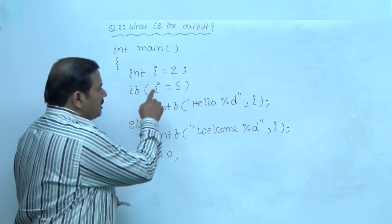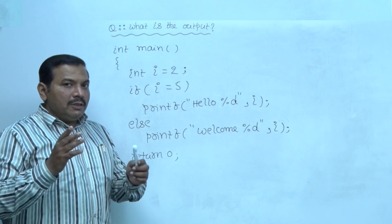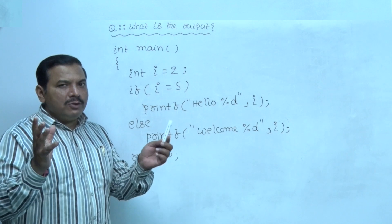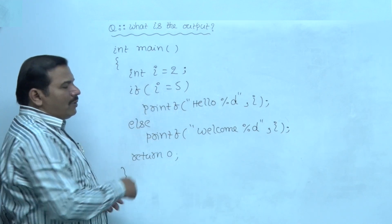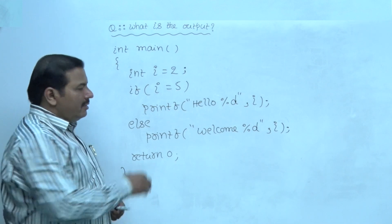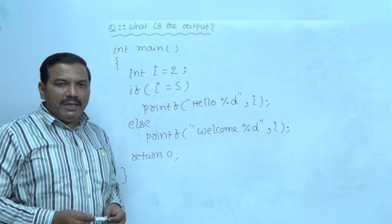Instead of single equal to, double equal to symbol is used, that operator checks equality between two quantities. But it is single assignment operator, assigns the right side expression value to the left side variable.